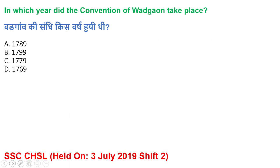Question: In which year did the Convention of Vadgaon take place? The answer is 1779. However, many are confused between 1779 and 1789.